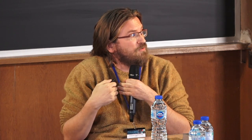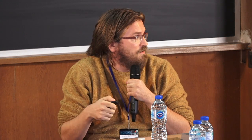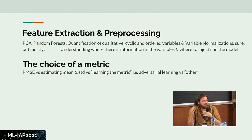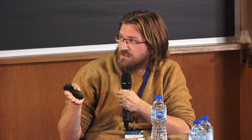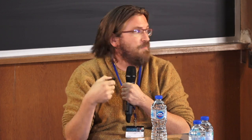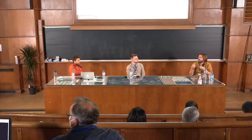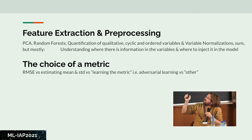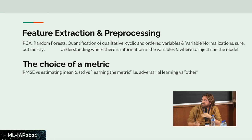A big part of that interaction is feature extraction and pre-processing: PCA or random forests for variable selection, dimensionality reduction, smartly transforming qualitative and cyclic variables, and normalizing variables correctly. Most importantly, it's critical to know at what point in your architecture to inject what information — otherwise, for example, if you put an entire image alongside two or three additional variables at the very beginning of the network, the information from those other variables may get lost. Understanding where to inject information is very important. The choice of metric also matters: using MSE implies an underlying hypothesis, but you could also estimate the mean and standard deviation of your distribution — there are many approaches to building cost functions that give more interesting outputs.